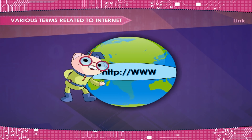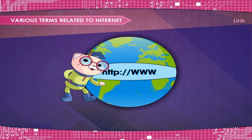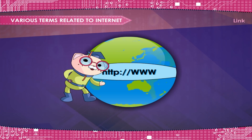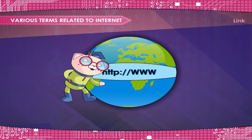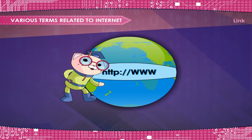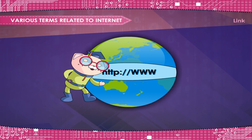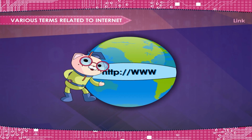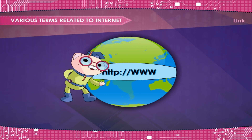Link. The link is the physical and logical network component used to interconnect hosts or nodes in the network. A link protocol is a suite of methods and standards that operate only between adjacent network nodes of a LAN segment or a WAN connection.